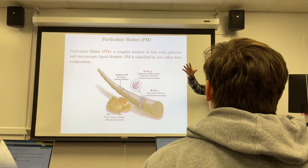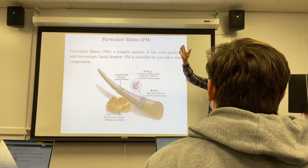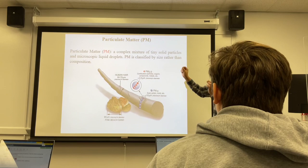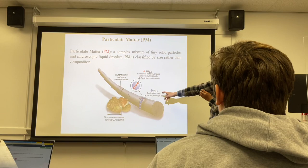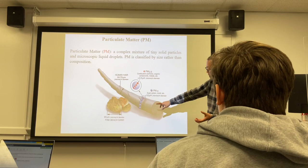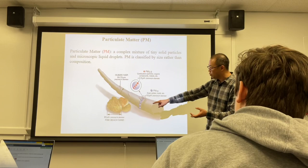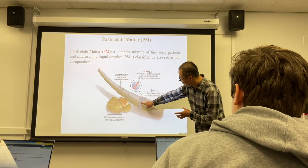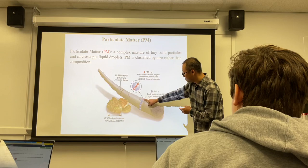PM consists of tiny droplets or solid particles suspended in the air. They're extremely small — that's why they can stay suspended and won't settle. If they're too big, they will settle. PM is classified by size: PM10 refers to particles smaller than 10 micrometers, and PM2.5 refers to particles smaller than 2.5 micrometers. Human hair is about 50–70 micrometers in diameter.